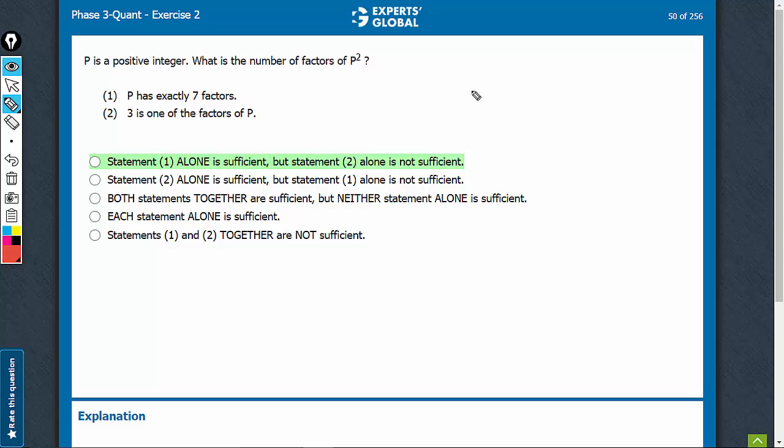P has exactly 7 factors. When can a number have 7 factors? Only when it is of the form prime raised to power 6.